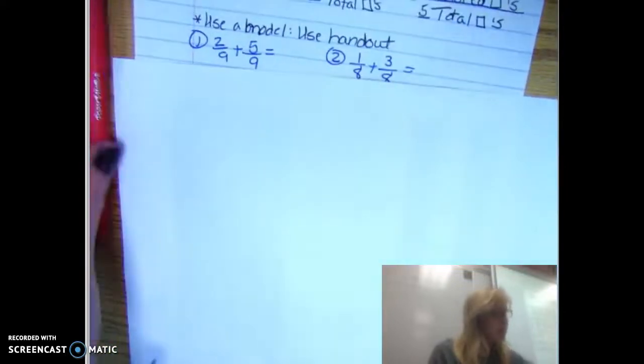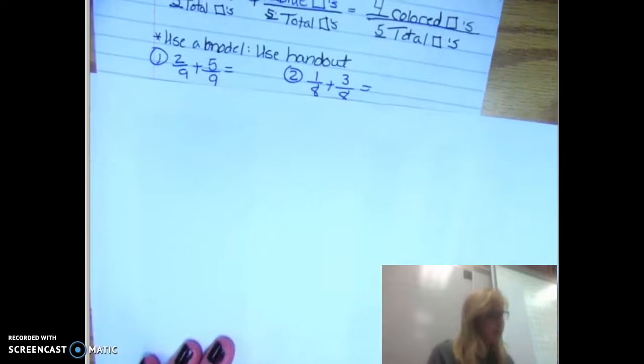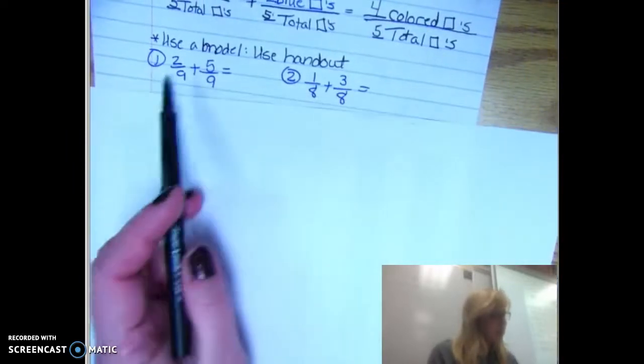So I want to use the model on the back of this to figure out what's two ninths plus five ninths.